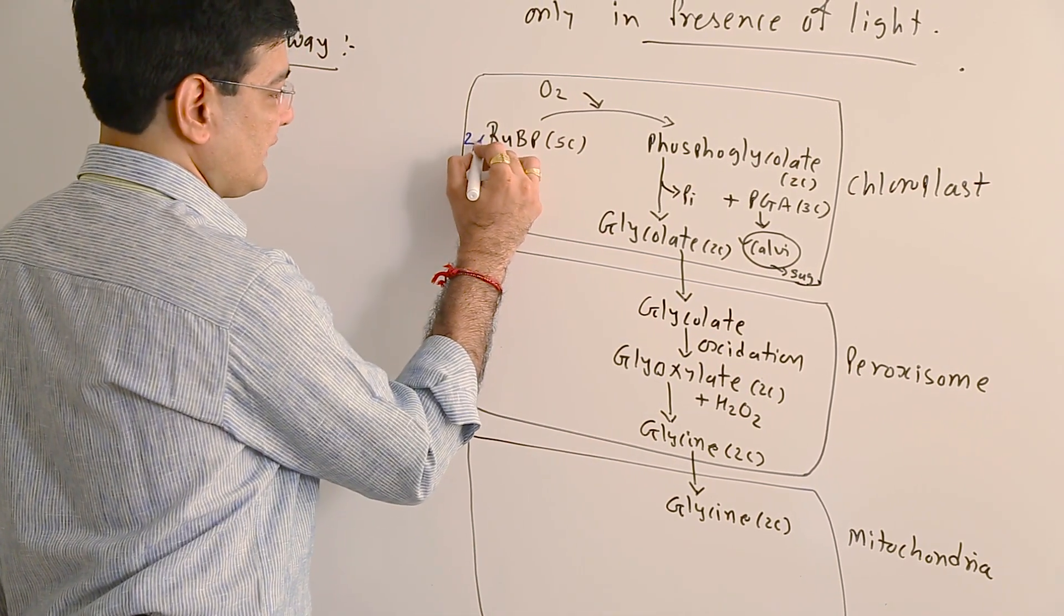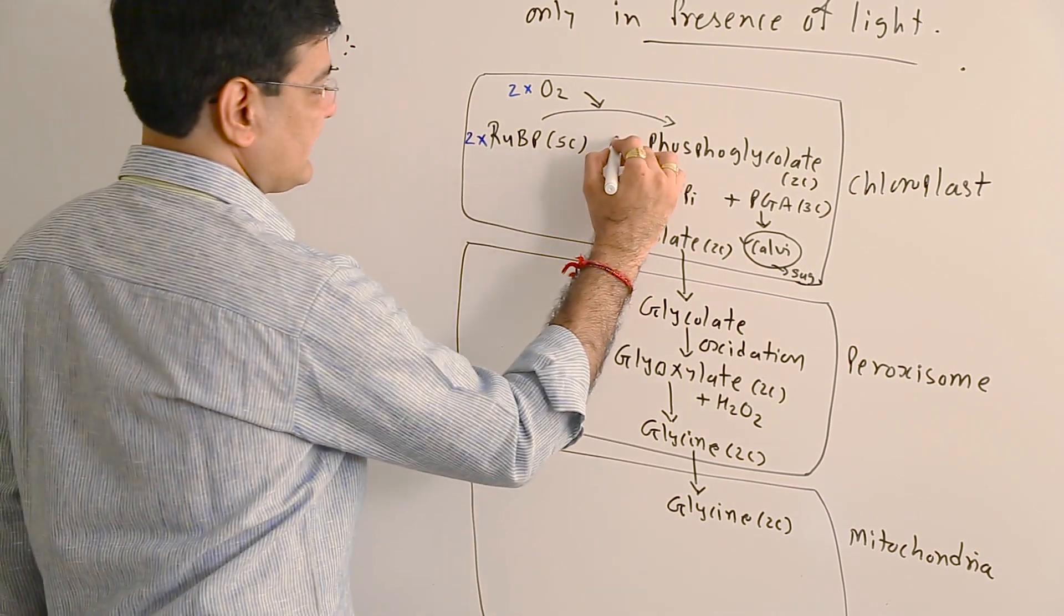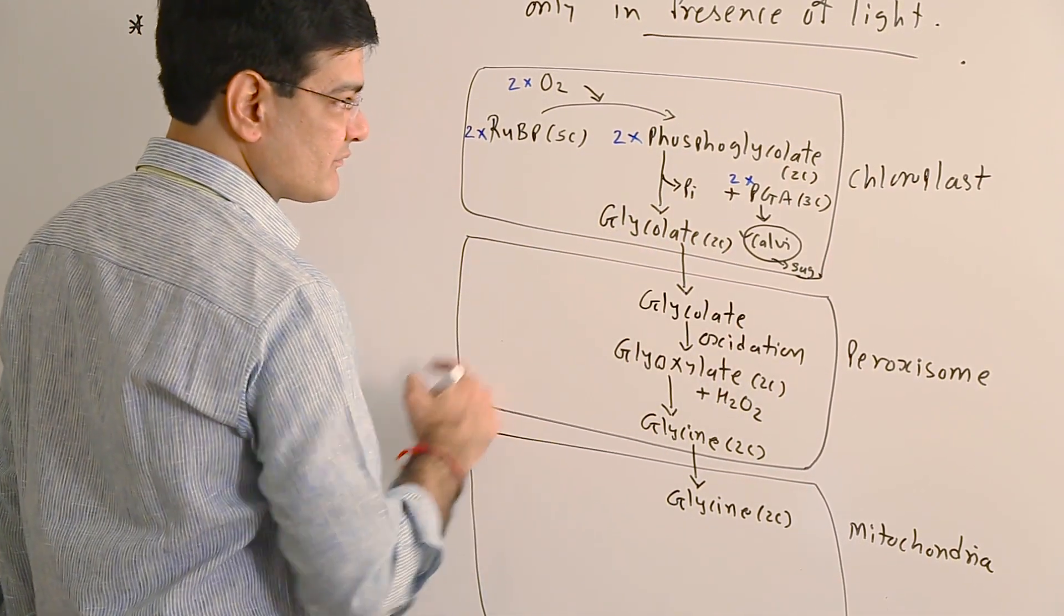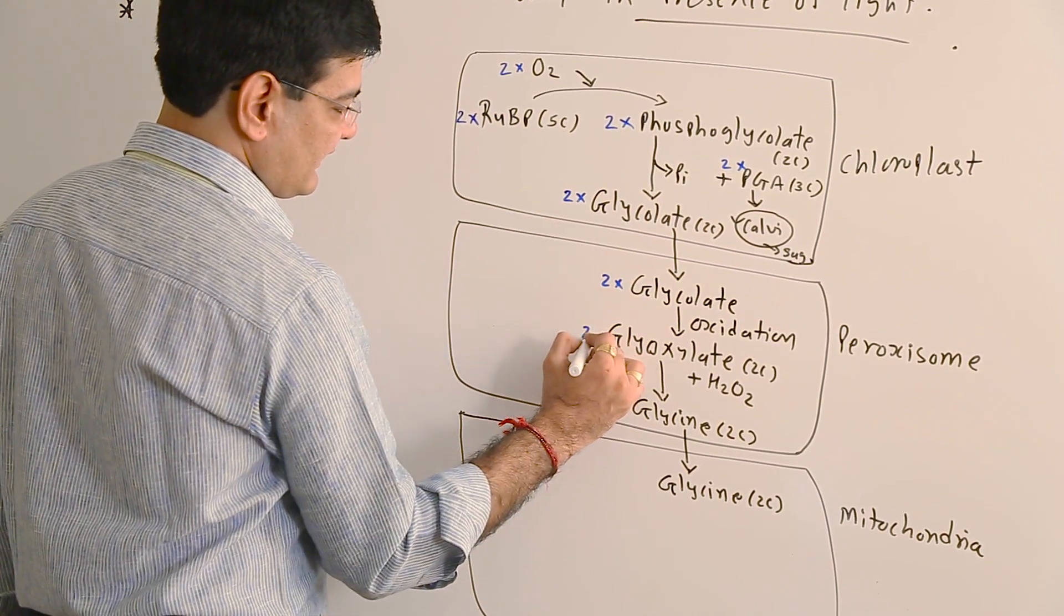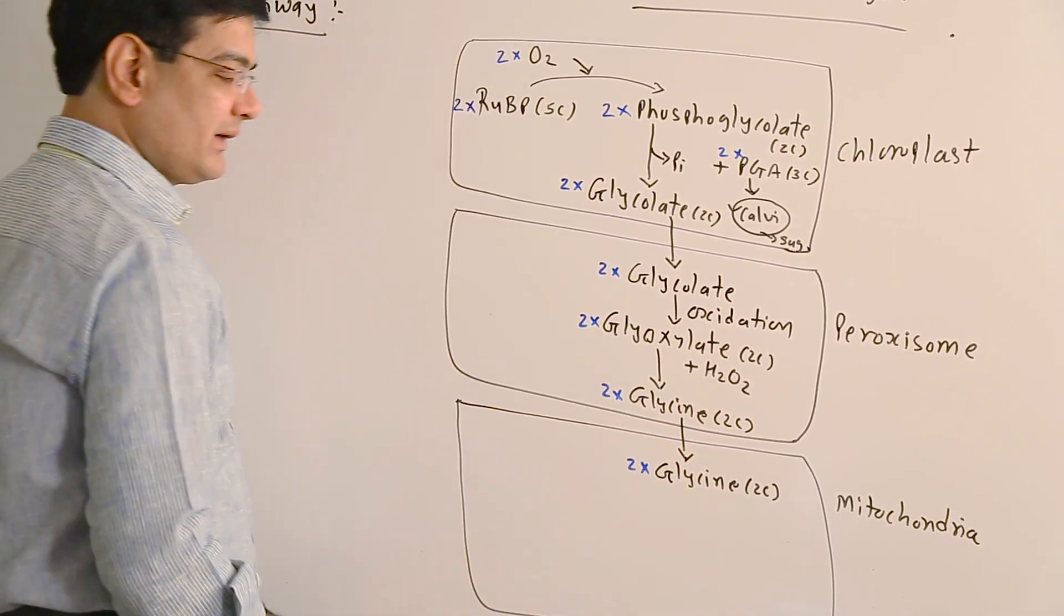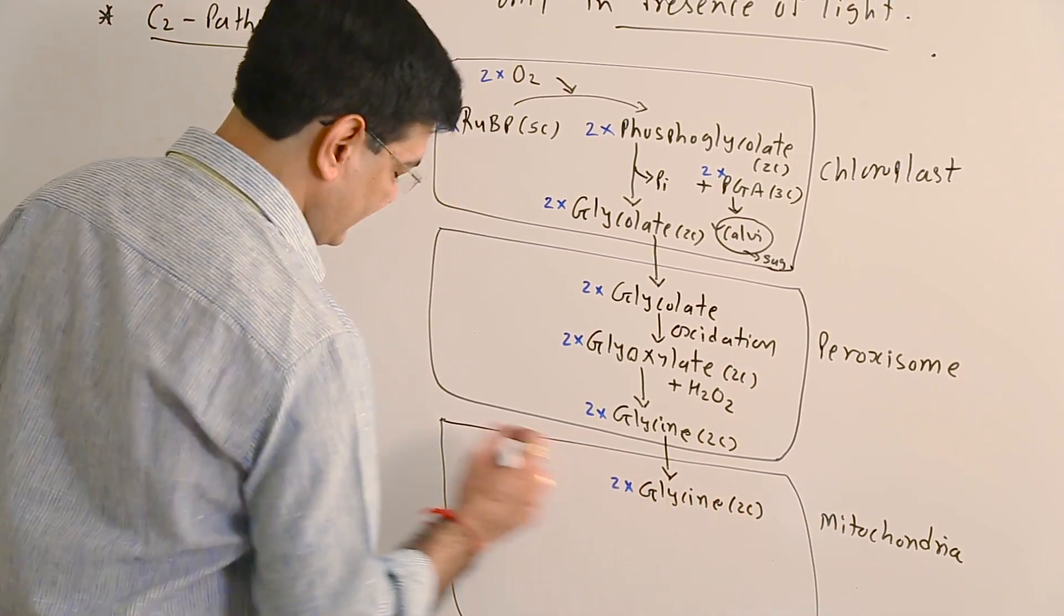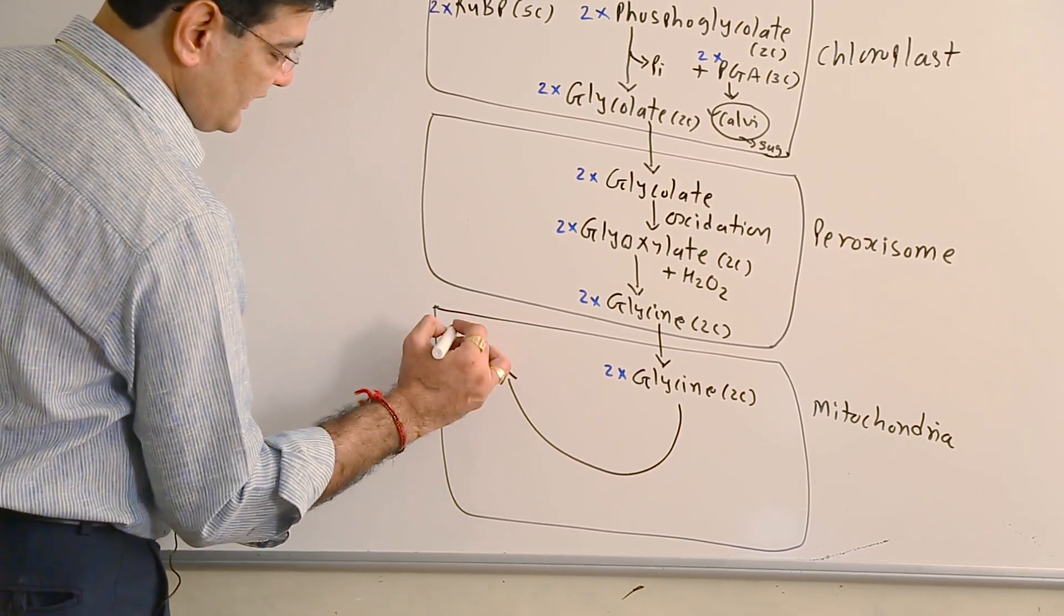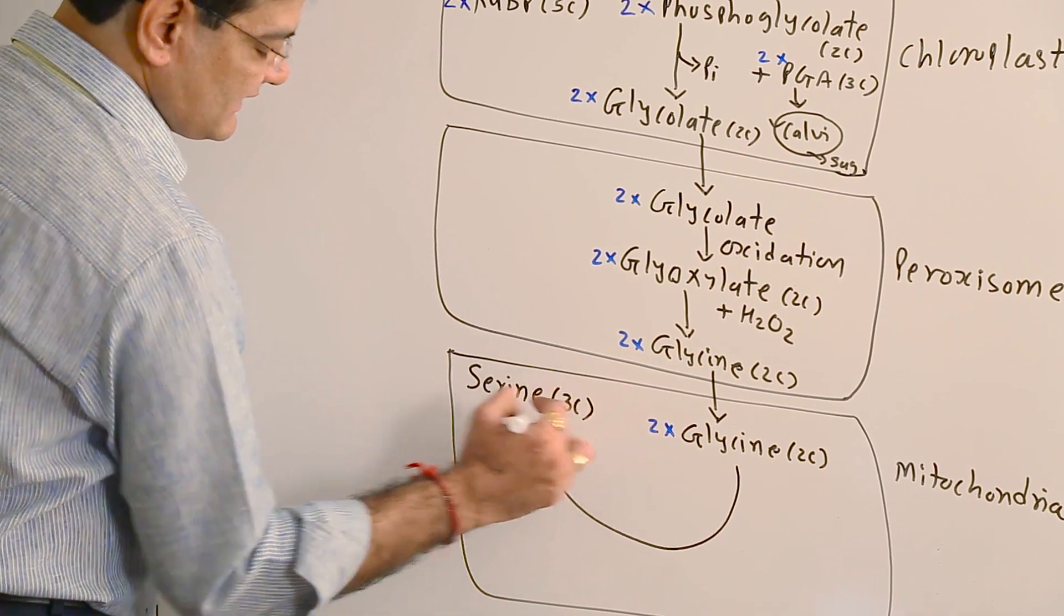In such case, when a second molecule of RuBP reacts with a second molecule of oxygen, the second phosphoglycolate and second molecule of PGA form. This phosphoglycolate again converts into glycolate, then glyoxylate, and then glycine. And this way, when two glycine molecules are present in the mitochondria, at that time this four carbons get transformed into a three-carbon containing molecule, and that is serine.